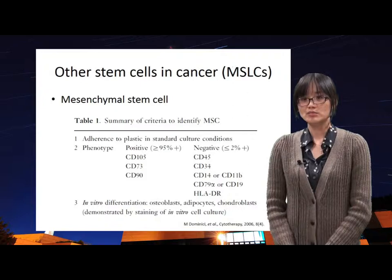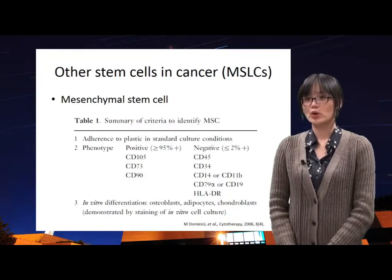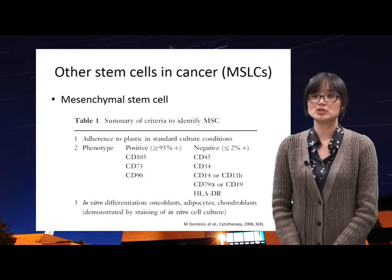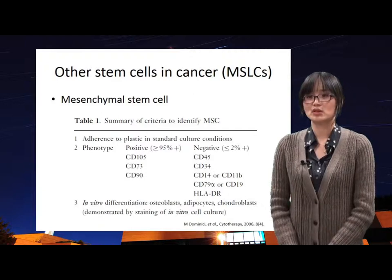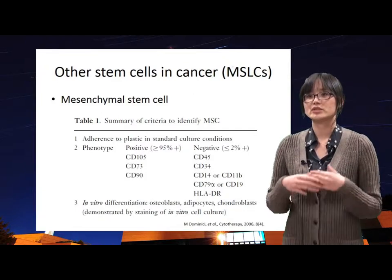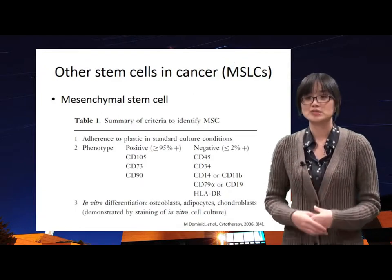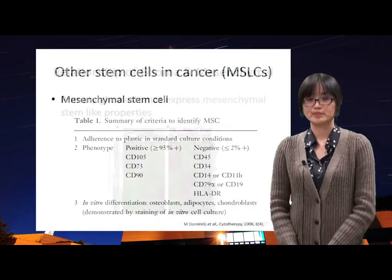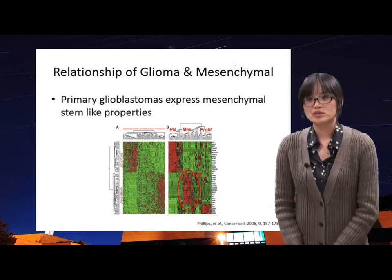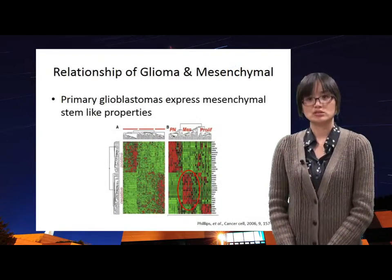In particular, criteria number one and three are the most important to decide whether a cell is a stem cell or not, because criteria number two, phenotype, is flexible. Why are mesenchymal stem cells important in this lecture?